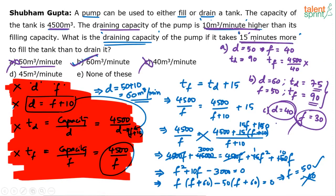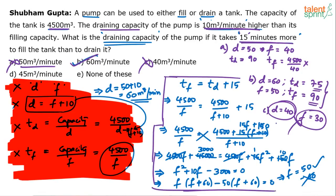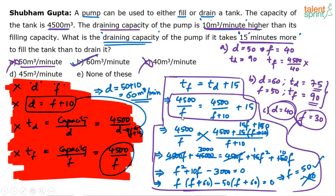Understand that you can use the options method only when you know the concept behind it. Using options is just about calculation, but you should also know the regular algebraic method. The most important step is setting up the key equation — everything else is just cross multiplication, quadratic equation, and simplification. The answer is option B: 60 meter cube per minute.